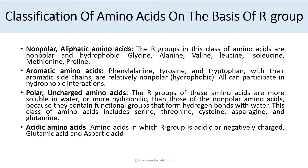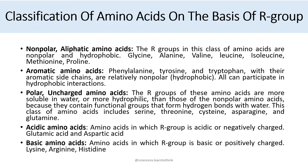Then we have acidic amino acids: amino acids in which the R group is acidic or negatively charged. There are two acidic amino acids: glutamic acid and aspartic acid. Finally, basic amino acids: amino acids in which the R group is basic or positively charged. These are lysine, arginine, and histidine. All together they make up the 20 amino acids.